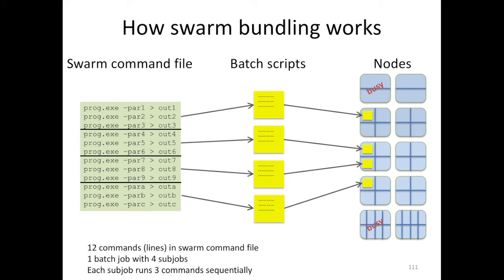So to summarize, you started off with 12 commands, 12 lines in your swarm command file. It produced one batch job with four subjobs, and each subjob runs three commands sequentially.